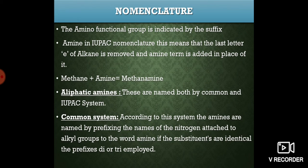Next is nomenclature — how amines are named. In IUPAC nomenclature, the amine functional group is indicated by the suffix '-amine'. The last letter 'e' of alkane is removed and '-amine' is added. For example, methane becomes methanamine, and ethane becomes ethanamine. This gives the general form 'alkanamine'.